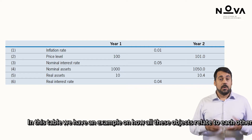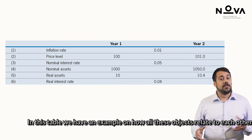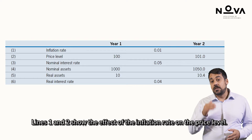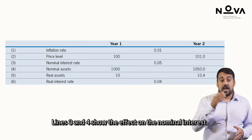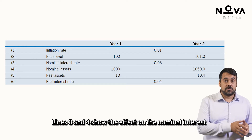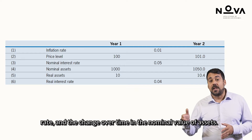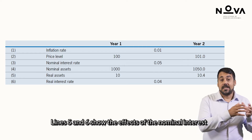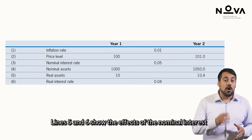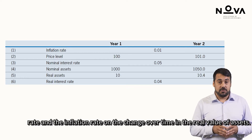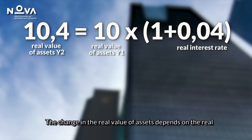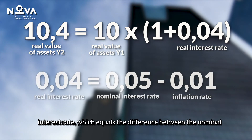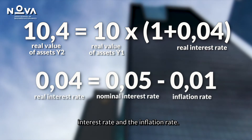In this table we have an example of how all these objects relate to each other. Lines 1 and 2 show the effect of the inflation rate on the price level. Lines 3 and 4 show the effect of the nominal interest rate on the change over time in the nominal value of assets. Lines 5 and 6 show the effects of the nominal interest rate and the inflation rate on the change over time in the real value of assets. The change in the real value of assets depends on the real interest rate, which equals the difference between the nominal interest rate and the inflation rate.